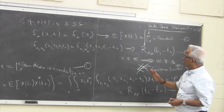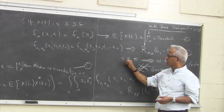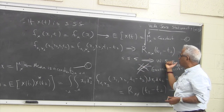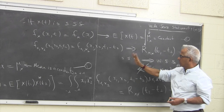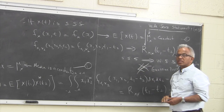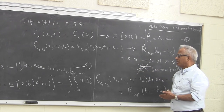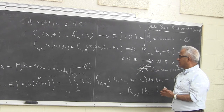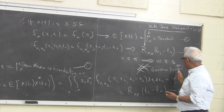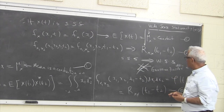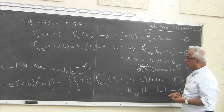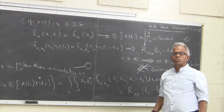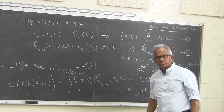In general, strict sense stationarity implies wide-sense stationarity. Wide-sense stationarity does not imply strict sense stationarity unless the process happens to be a Gaussian process, in which case both are one and the same.